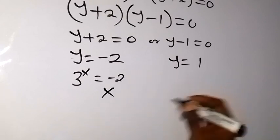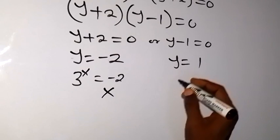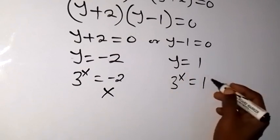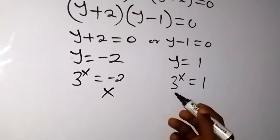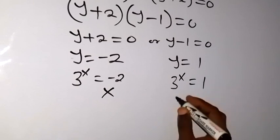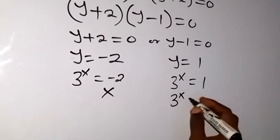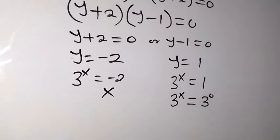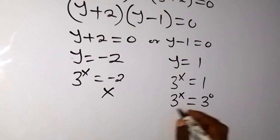Then we have 3 raised to power x equals to 1. We can express 1 in base 3 as well. We now have 3 raised to power x equals to 3 raised to power 0, because any number raised to power 0 is 1. Such that the bases are equal now, then x equals to zero.